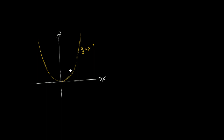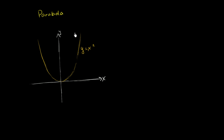Here I've drawn the most classic parabola, y is equal to x squared. What I want to do is think about what happens if I were to shift this parabola. Let's think about a couple of examples — specifically, the graph of the curve y is equal to x squared.